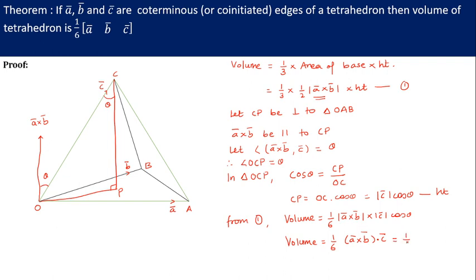Further, it can be written as 1 by 6 times scalar triple product of A bar, B bar, C bar. As the definition of scalar triple product A bar, B bar, C bar is A bar cross B bar dot C bar. So here is the proof for the volume of tetrahedron is 1 by 6 times box product of A bar, B bar, C bar, if A bar, B bar, C bar are coterminous or co-initiated edges. Thank you.